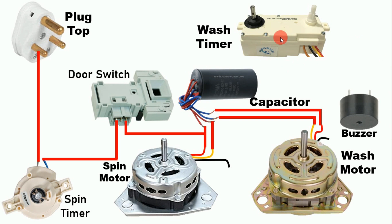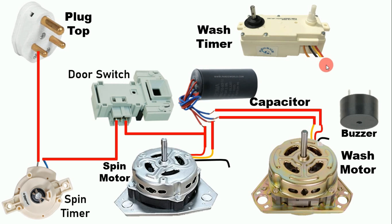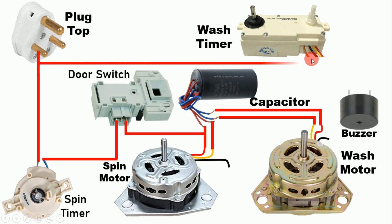Now let's do the connection of the wash timer. The wash timer has four wires — one for input power supply, one connected to the running winding, one connected to the starting winding, and one for the buzzer. To provide input power supply to the wash timer, loop a wire from the input terminal of the spin timer and connect it to the wash timer. The brown wire is considered here as the input power supply wire.